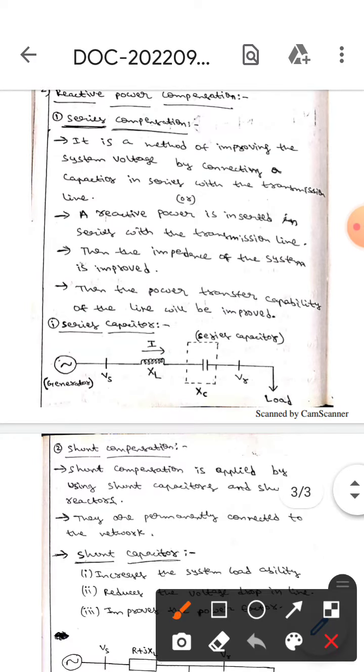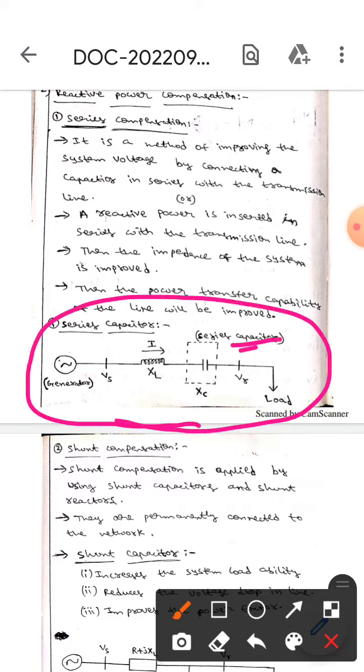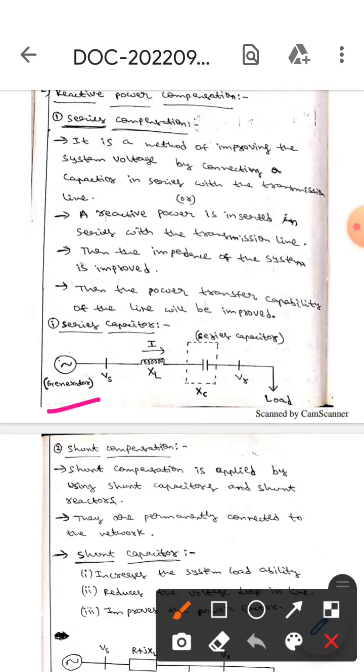This is the diagram for series capacitor. This is the series capacitor, the generator, the VS, the VR, the XL, and the XC.